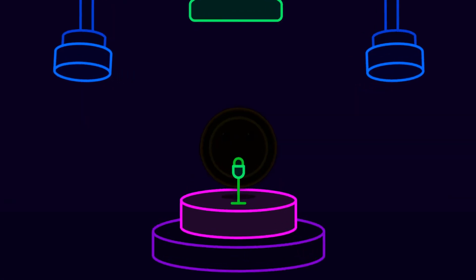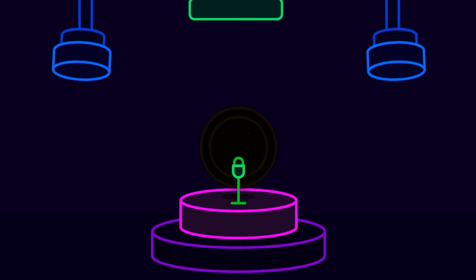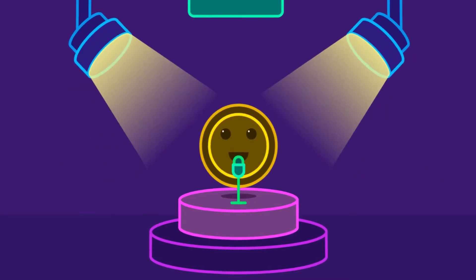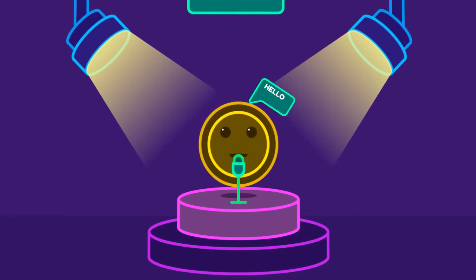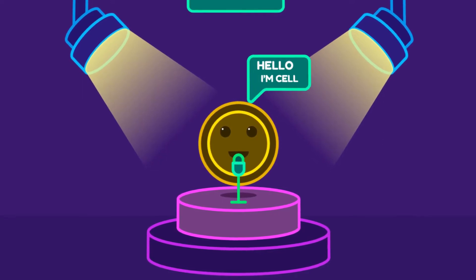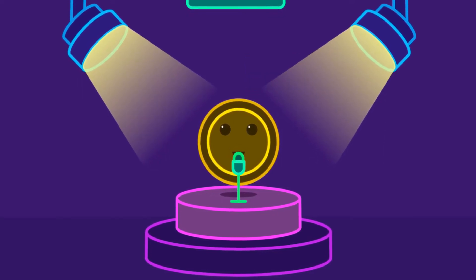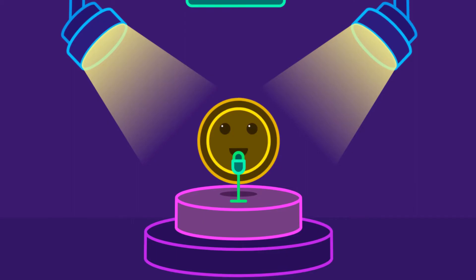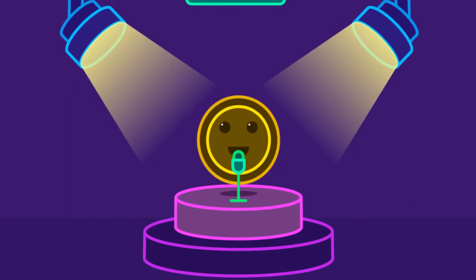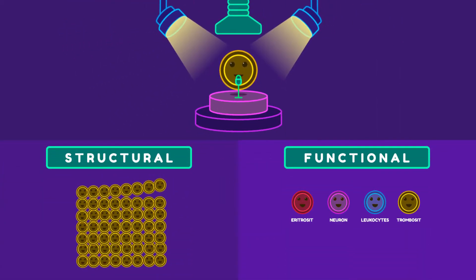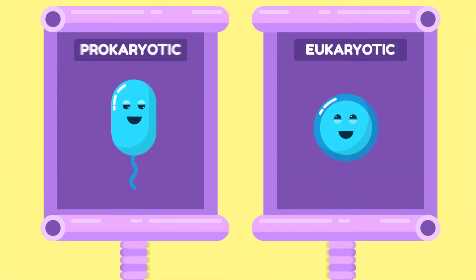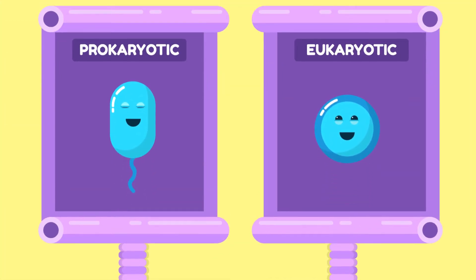Our today's guest is a cell. Please join your hands together as we invite him for a talk. Hello, I am a cell and I am the smallest unit of every living organism. I can perform structural and functional roles in living organisms. I am different in eukaryotic and prokaryotic organisms.